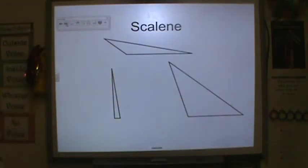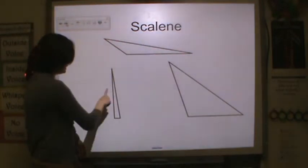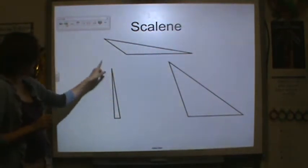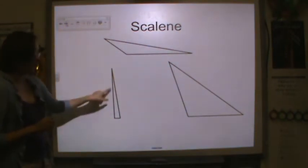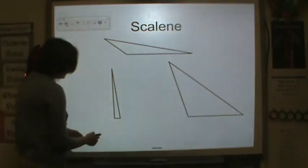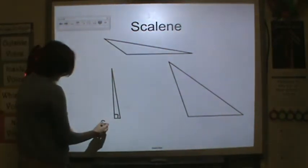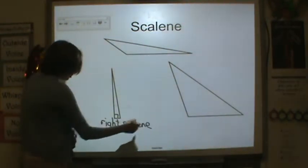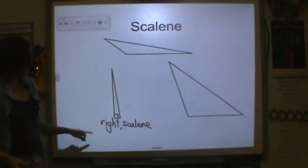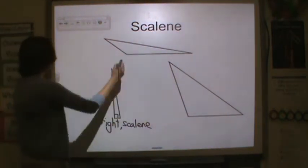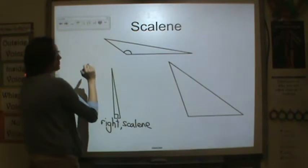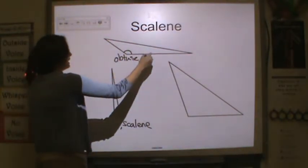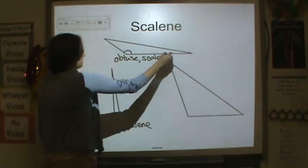So let's look at these scalene triangles. You can see that none of these sides are the same length. This one looks kind of close, but you can see it's at an angle and this one's straight. This is a right scalene triangle because it has a right angle and it is scalene. This is an obtuse angle, so you have an obtuse scalene triangle.